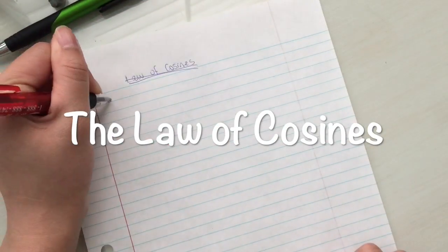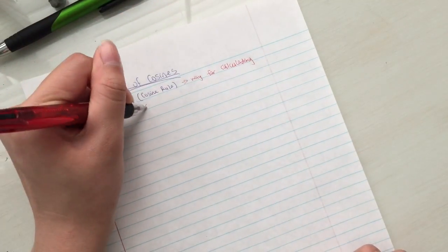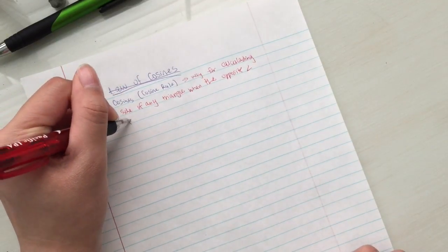My topic of review today is on the law of cosines. The law of cosines, or called the cosine rule, is a way for calculating the third side of any triangle when the opposite angle and two remaining sides are known.